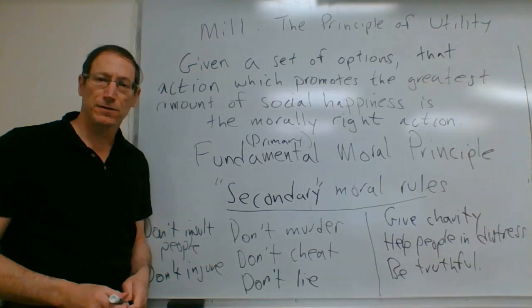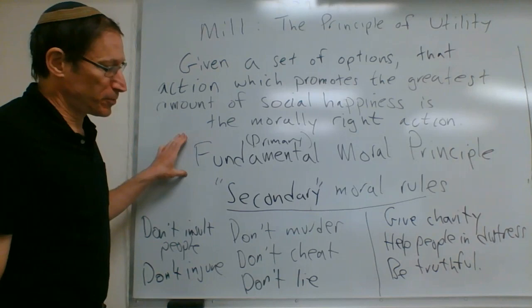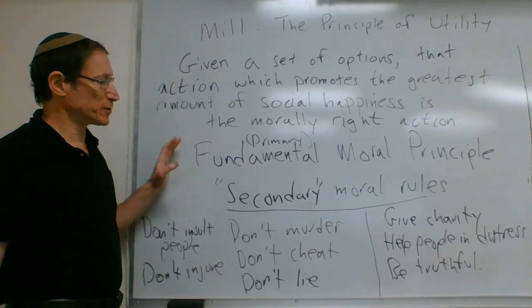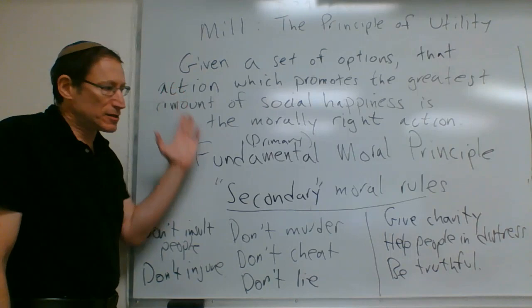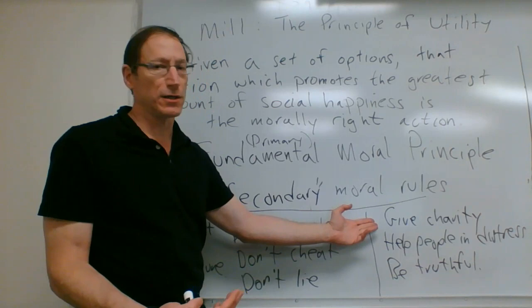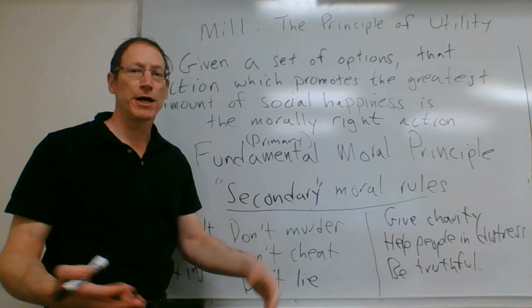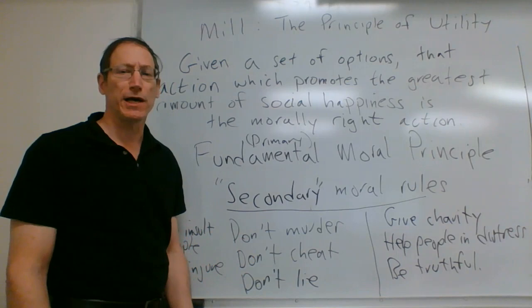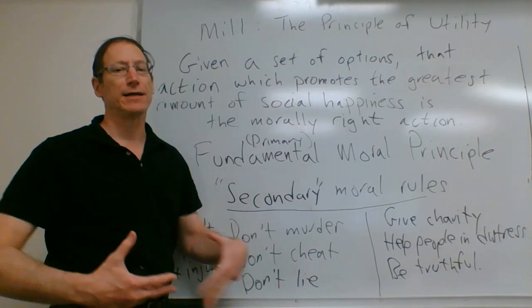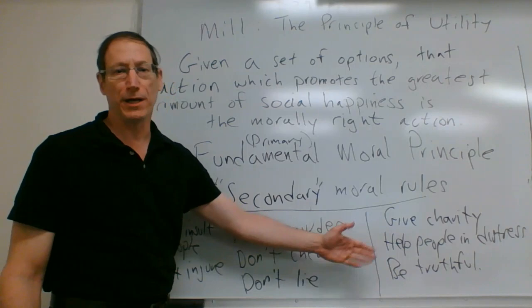There are really two differences between the fundamental moral principle and secondary moral rules. First, the fundamental moral principle is the basis for why these secondary rules are even true in the first place. Mill would ask: what is it about giving charity that's so good? Why do we think helping people in distress is a good thing? Because it flows from that primary principle of trying to bring about, or maximize, social happiness.